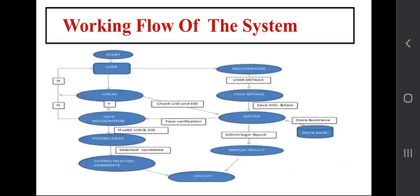The working flow of the system involves several steps. Step one: every new user in India is first registered for voting — so our first step is registration. Step two: at the time of registration, the system captures the face of the user using a webcam and stores the face sample in the database for security purposes. Step three: at the time of election, three levels of security are used — unique ID verification, voter ID verification, and face recognition. Step four: the system checks whether the unique ID or voter ID entered by the voter is correct.